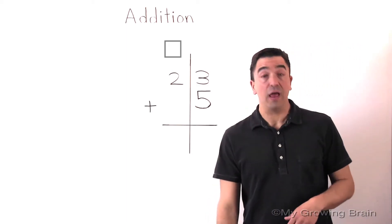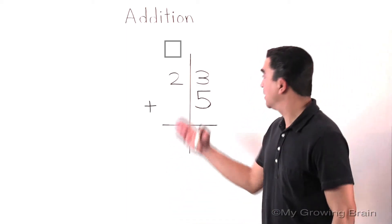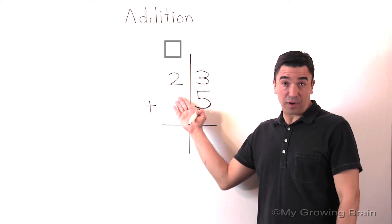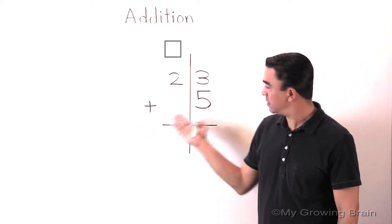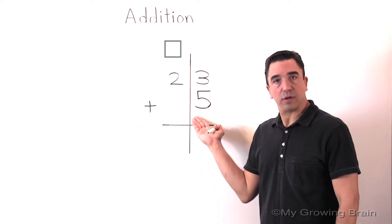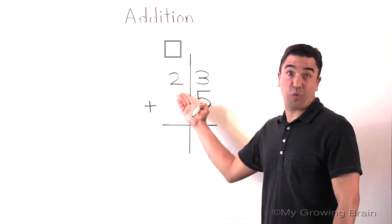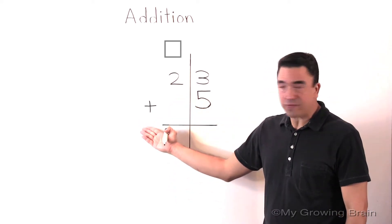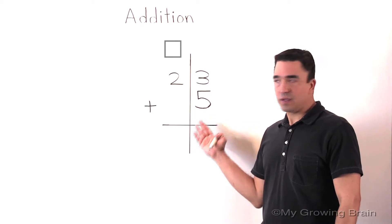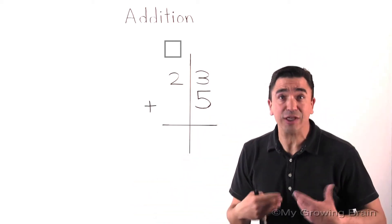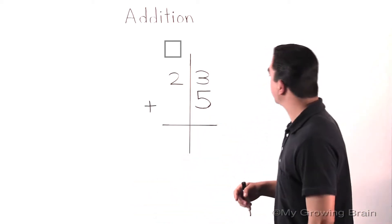Today's lesson is on addition. To be more specific, a two-digit number plus a one-digit number, or 23 plus 5. Let's get started. I love addition. You're going to love it too. Let's get to it.